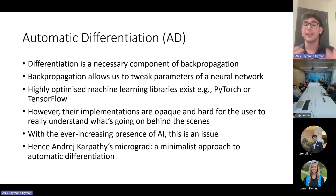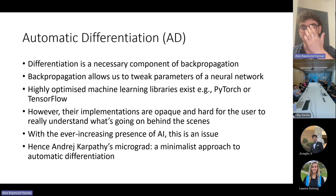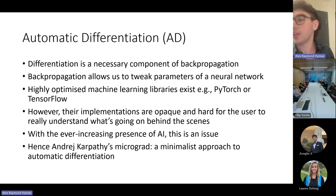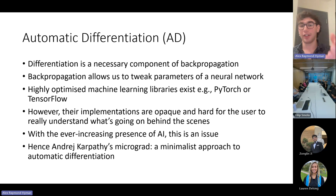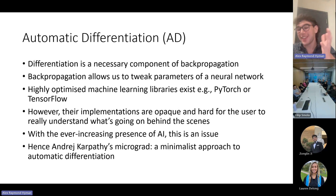Differentiation in general is an indispensable element of machine learning as it facilitates the optimization of a neural network through the tweaking of its parameters. Highly optimized ML libraries do exist — for example PyTorch and TensorFlow — however due to their significant levels of optimization, their implementations are often lengthy, opaque, and quite challenging for the user to really understand what's going on behind the scenes. In a world where we're ever more reliant on AI, especially in safety critical scenarios, the lack of transparency and comprehension of AI is becoming a major issue. This is why we're interested in a minimalist approach to AD.